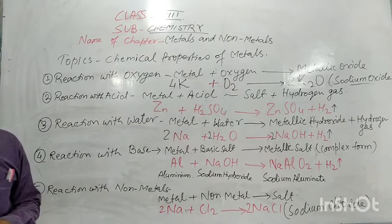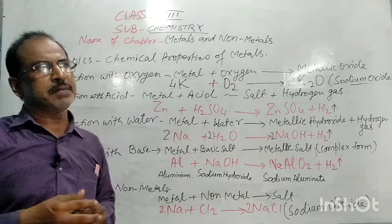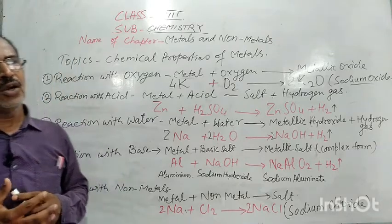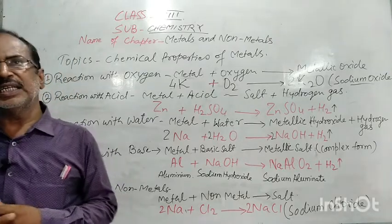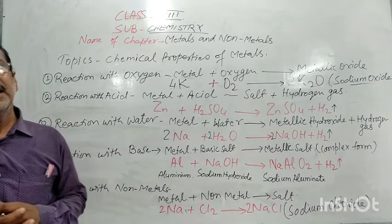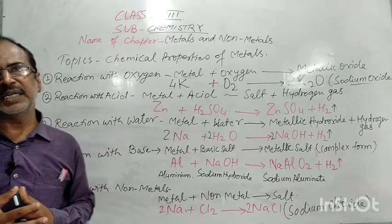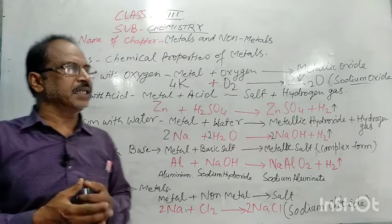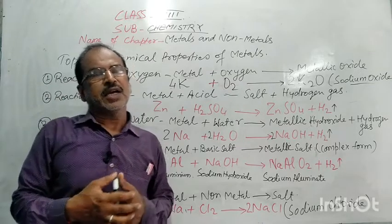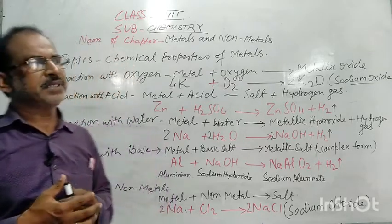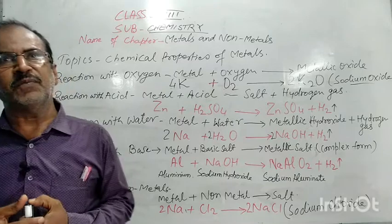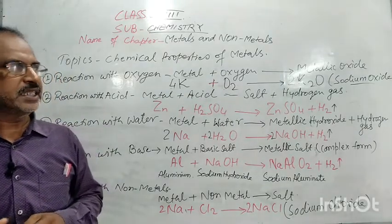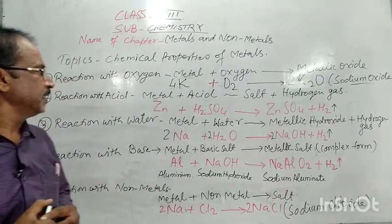But noble metals — for example, gold, silver, copper — generally do not react with oxygen at normal temperature. For these, we need to supply heat, and then they properly react with oxygen in the presence of heating to form copper oxide.